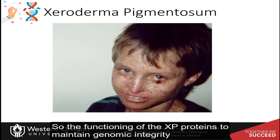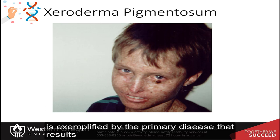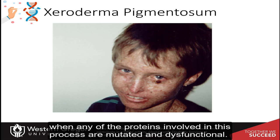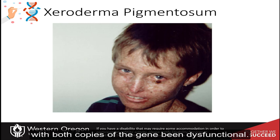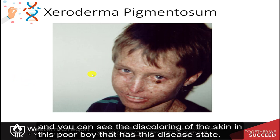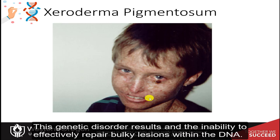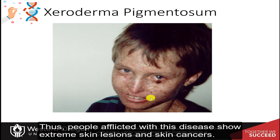The function of the XP proteins to maintain genomic integrity during nucleotide excision repair is exemplified by the primary disease that results when any of these proteins are mutated and dysfunctional. The mutation must be autosomal recessive, with both copies of the gene being dysfunctional. This results in a condition called xeroderma pigmentosum — you can see the discoloring of the skin in this patient. This genetic disorder results in the inability to effectively repair bulky lesions, including thymine dimers caused by ultraviolet light found in sunlight. People afflicted with this disease show extreme skin lesions and skin cancers.